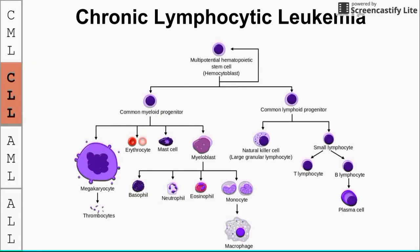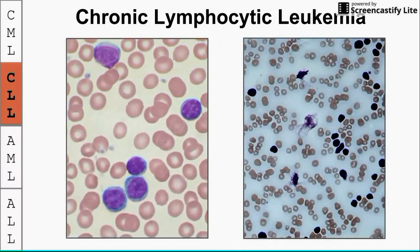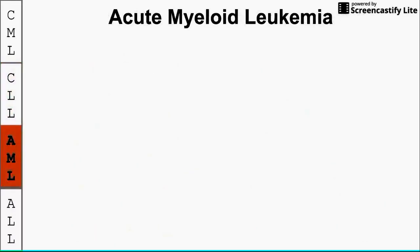On the differentiation branch, CLL originates from a mature B lymphocyte — very different from the stem cell affected in CML. The blood smear shows a homogeneous population of lymphocytes, all B cells of the same type. You can also see a couple of smudge cells on the smear that got smushed during preparation.